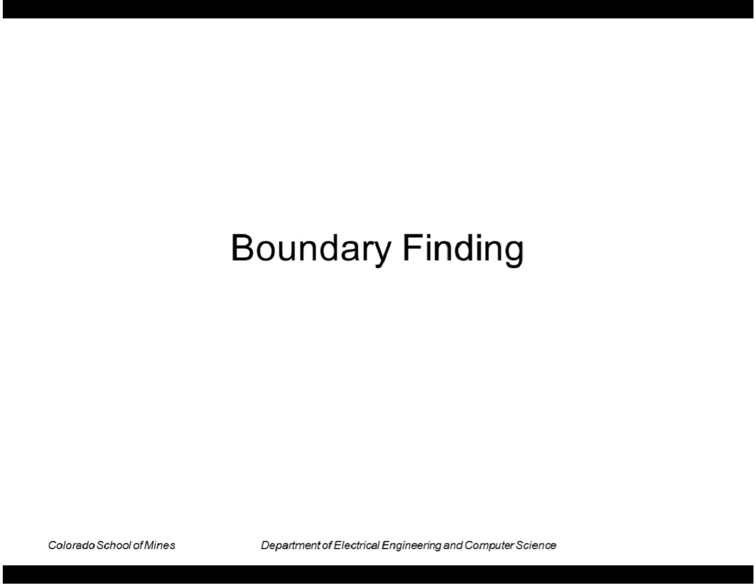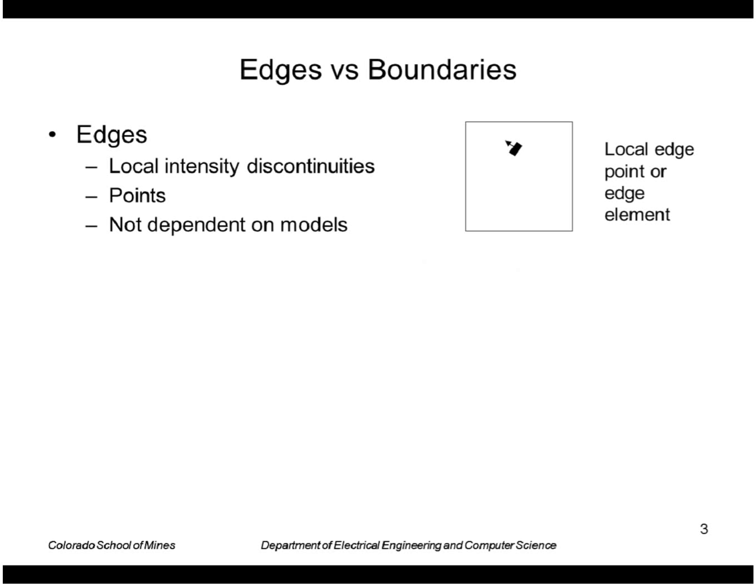Today I'm going to talk about boundary finding. We've seen edge detectors such as Canny and Sobel operators. Those detect edge points which are places in the image where we have local intensity discontinuities.